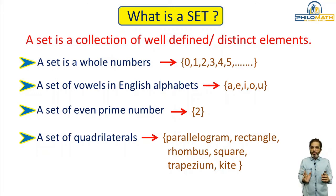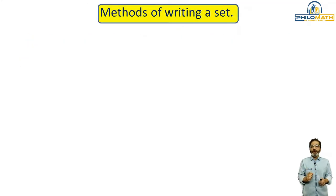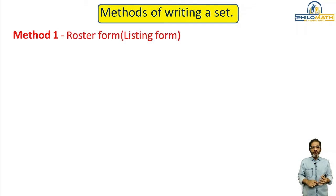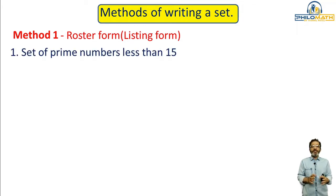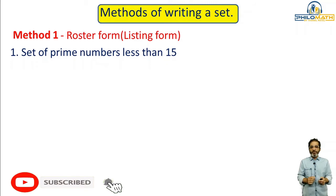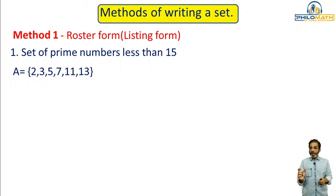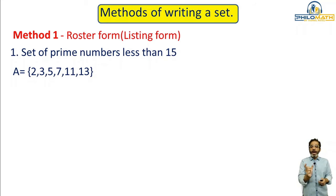So the collection of well-defined distinct elements is called a set. Now let us start with the methods of writing a set. The first method is called the roster form, also called the listing form. In listing form, we list all the elements. For example, the set of prime numbers less than 15: we write A = {2, 3, 5, 7, 11, 13}. A set is always denoted by a capital letter and the elements are written inside curly brackets.